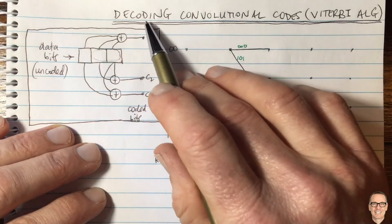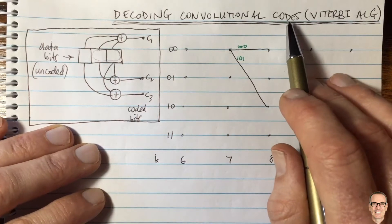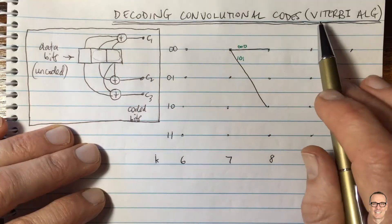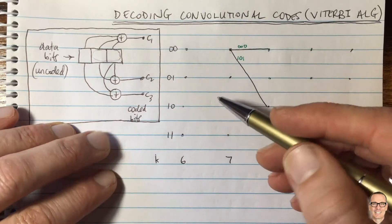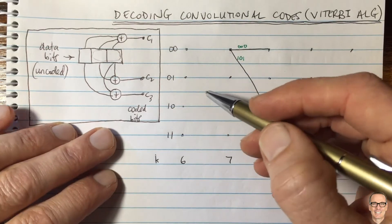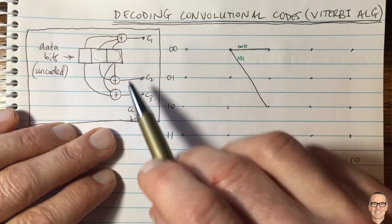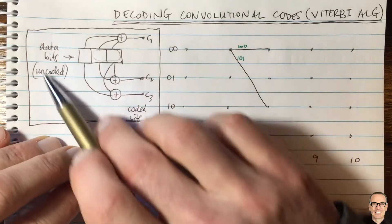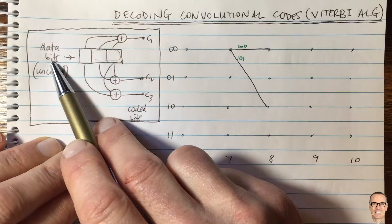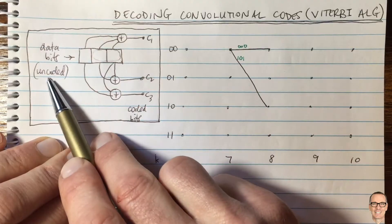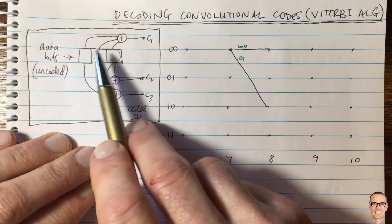Let's look at how to decode a convolutional code using the famous Viterbi algorithm. I'm not going to give all the details here, but we're going to cover the main points. Here we have our convolutional code, where our data bits — uncoded — are going to go into the shift register.